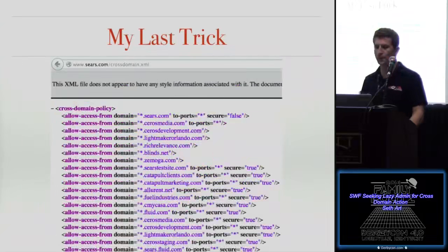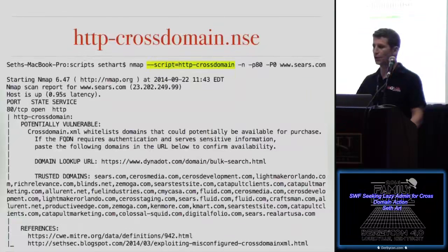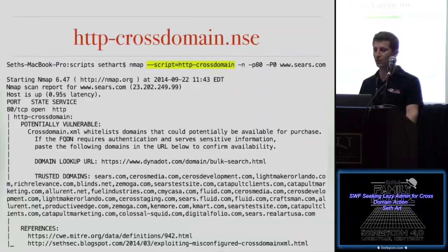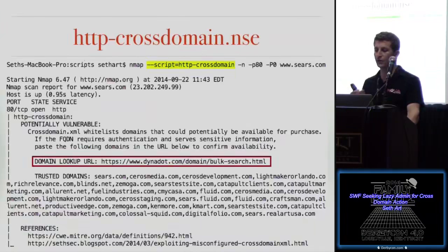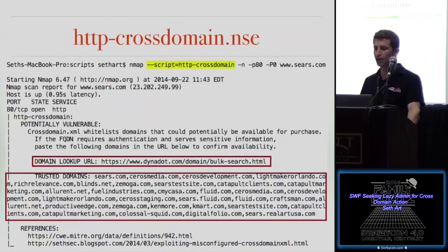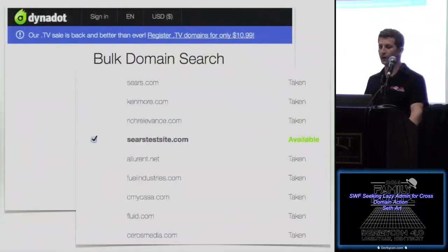Sears.com is another example that trusts many domains. This gave me an opportunity to write an nmap script called http-cross-domain. It's not in nmap yet — I'll publish it to the mailing list shortly after this talk. You input a domain, it checks for the existence of a cross-domain.xml file, and if one exists trusting multiple domains, it gives you a link to Dynadot and a bulk domain search lookup tool with the trusted domains as a comma-delimited list. You paste that list into the bulk domain search tool, and if you're lucky you'll get a hit on an available domain that you can purchase to prove your point.